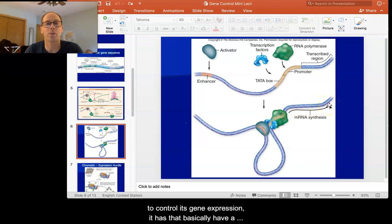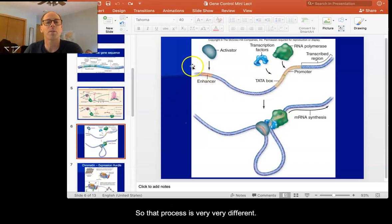So if the cell wants to control its gene expression, it has to basically have a whole bunch of these transcription factors. Usually there's several that have to be present in the cell in order to get this gene to be expressed. And these transcription factors may be made by other genes that are activating this particular gene. So that process is very, very different.